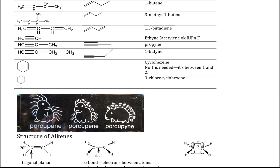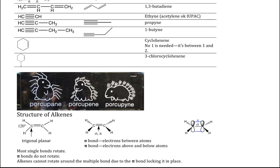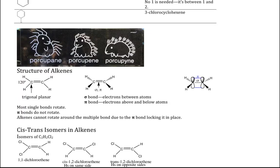We can have cyclic alkenes but not cyclic alkynes — the bond angles just wouldn't work. A 6-carbon cyclic alkene is cyclohexene; no number is needed for the double bond, as it's taken to be between C1 and C2. With a substituent, we need a number — if chlorine is at carbon 3, we have 3-chlorocyclohexene.